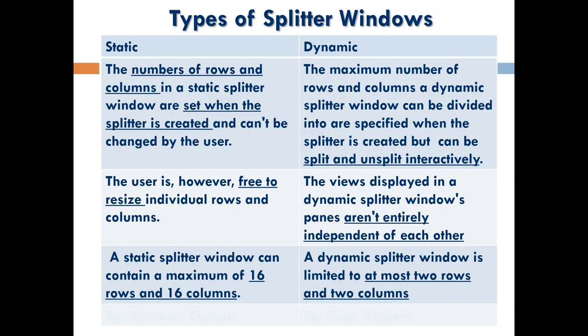In a dynamic splitter window, after you have created it, you can still do split and unsplit actions, which means you can change the number of rows and columns even after it has been created. In static splitter window, resizing one column affects the adjacent column — like an Excel sheet. But in dynamic splitter window, each window is completely independent of the other. The restriction is you can only have at most two rows and two columns.